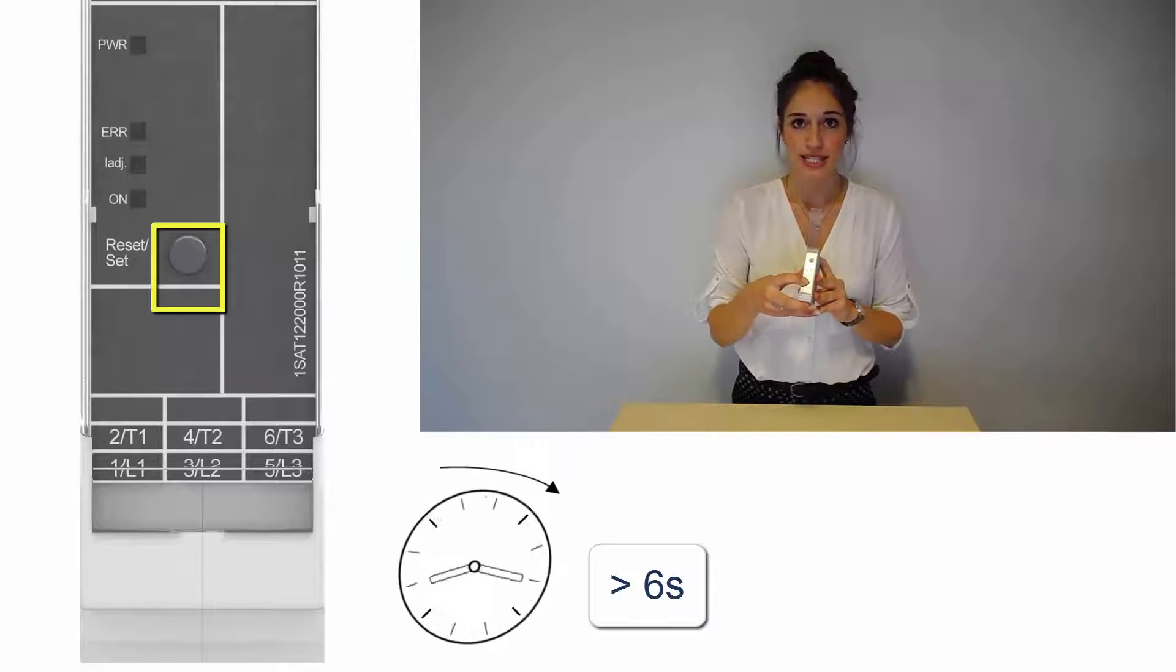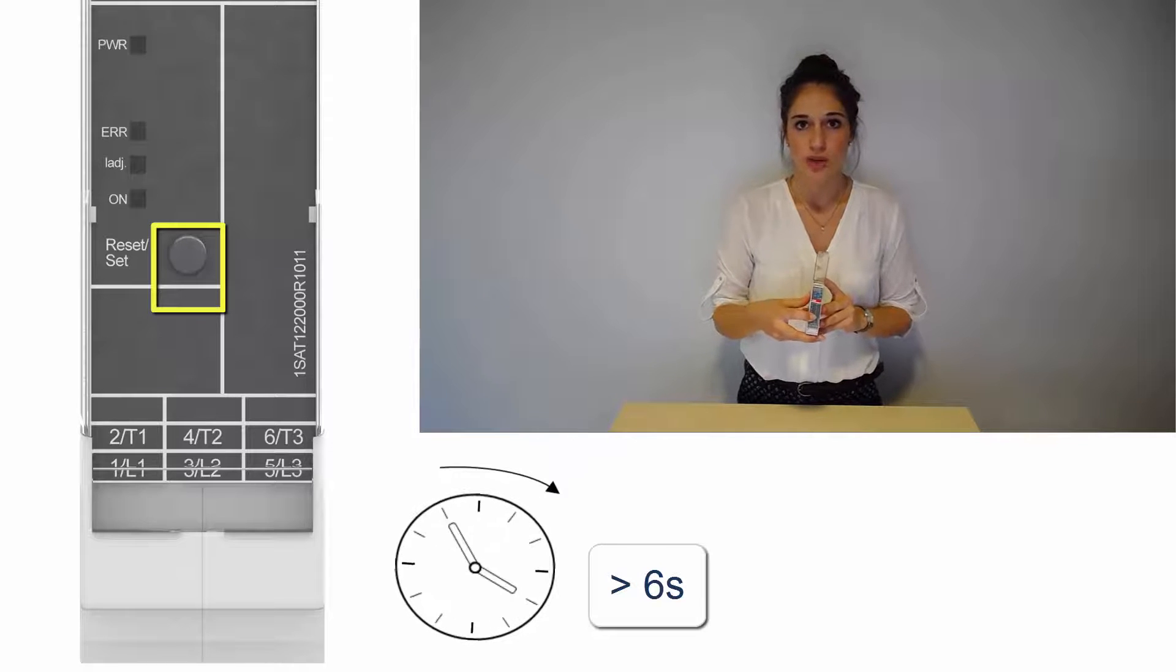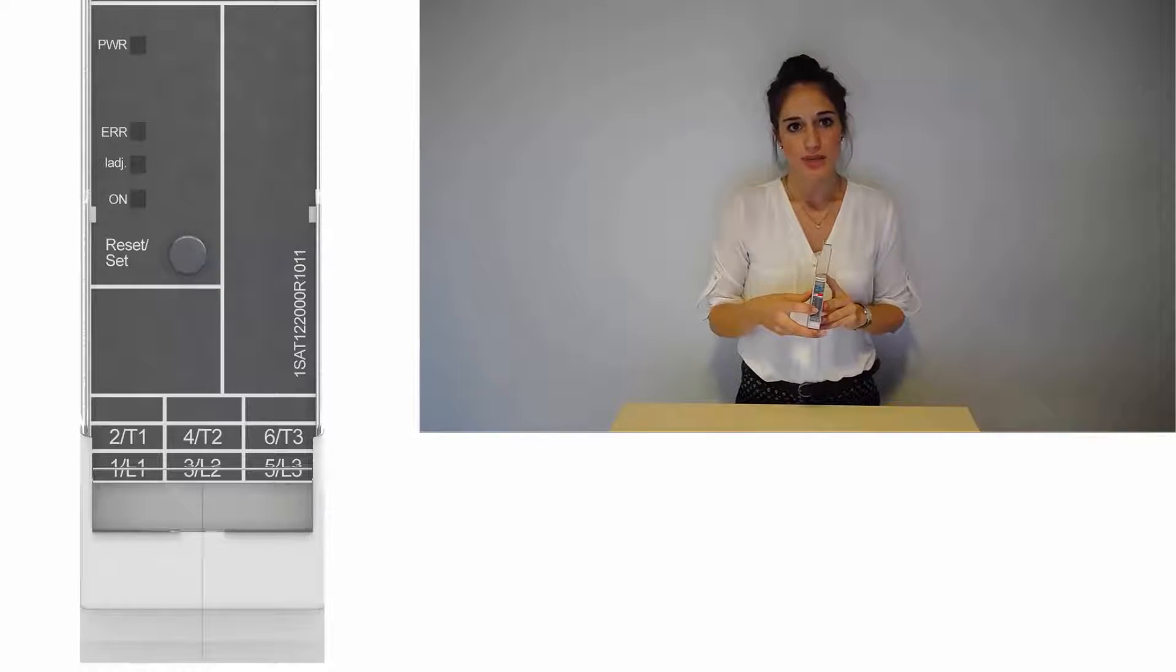Press the reset button for more than 6 seconds to change to the right mode. The green PWR LED flashes once.